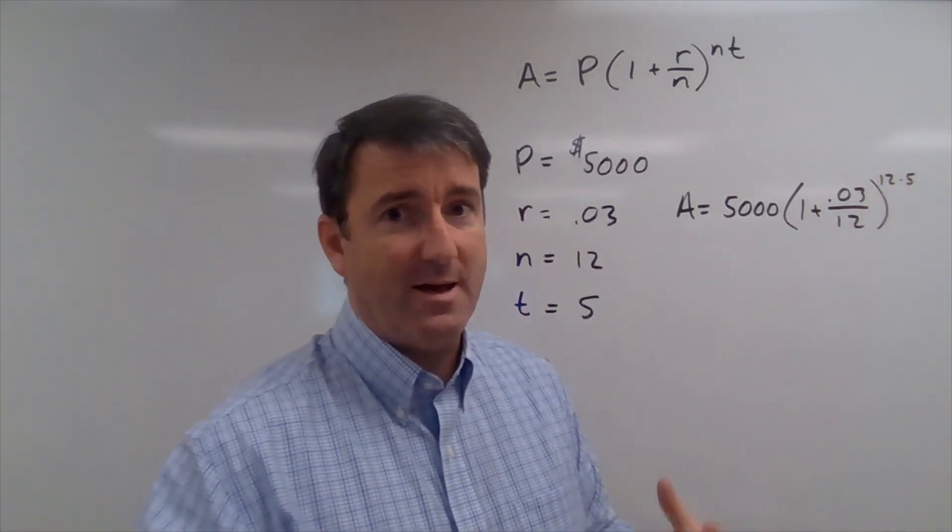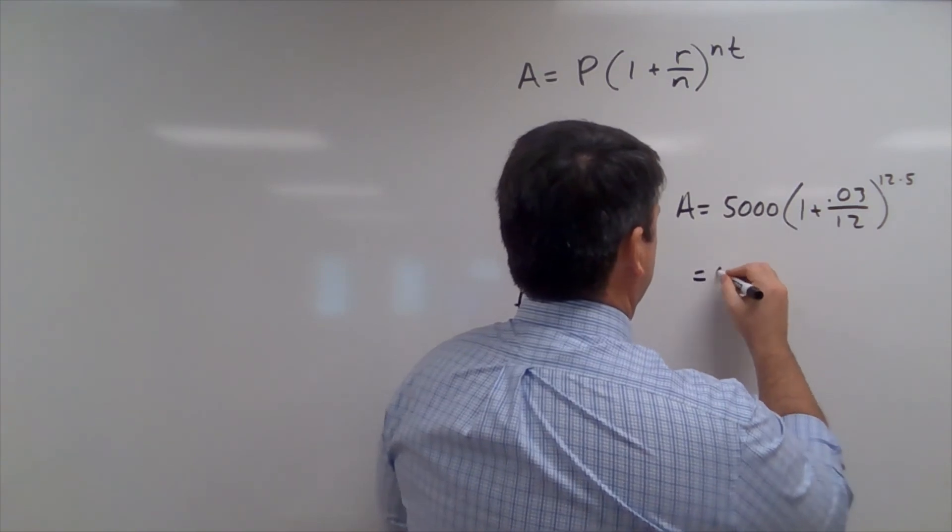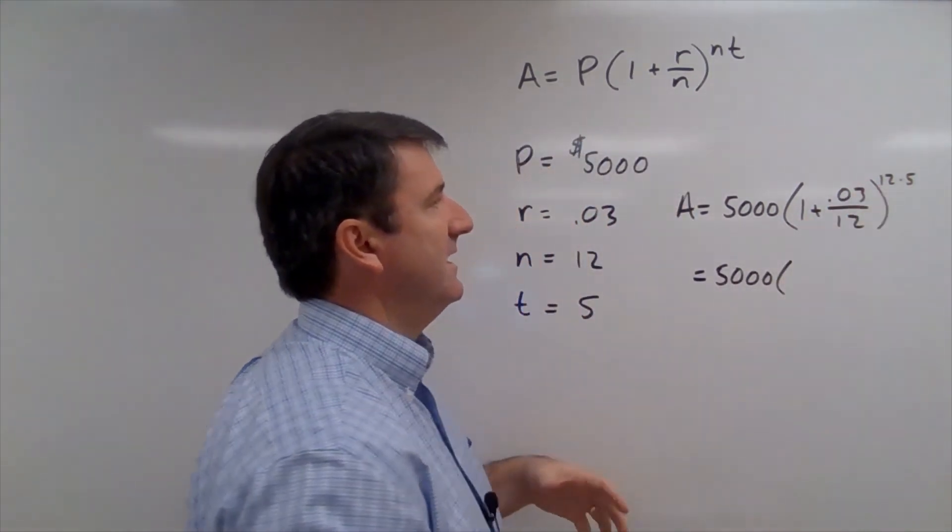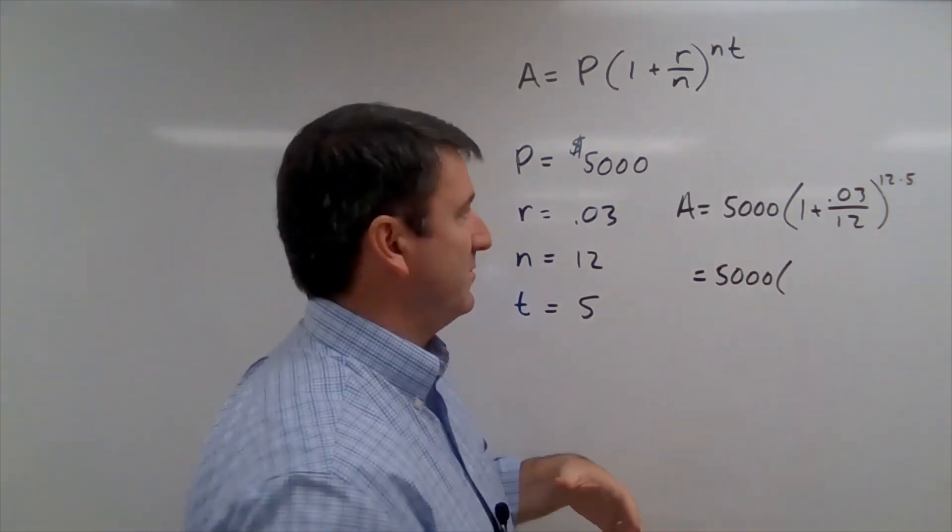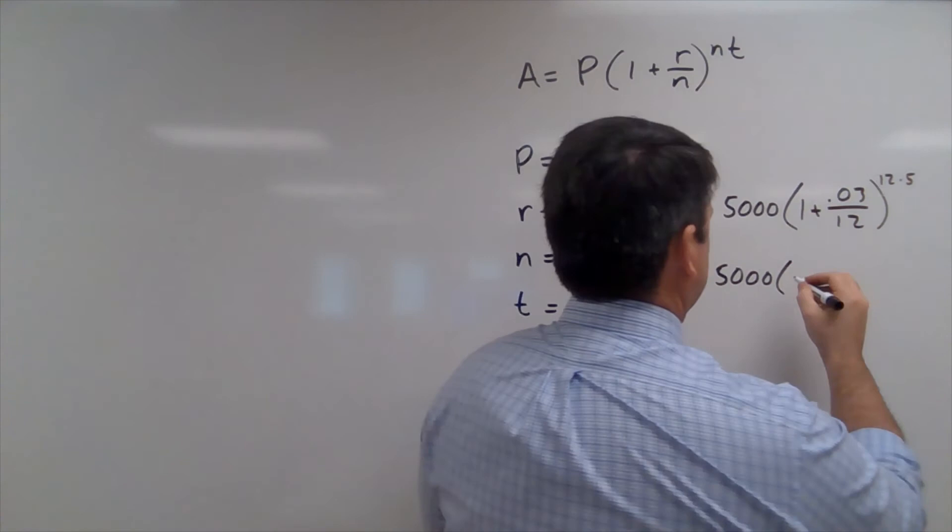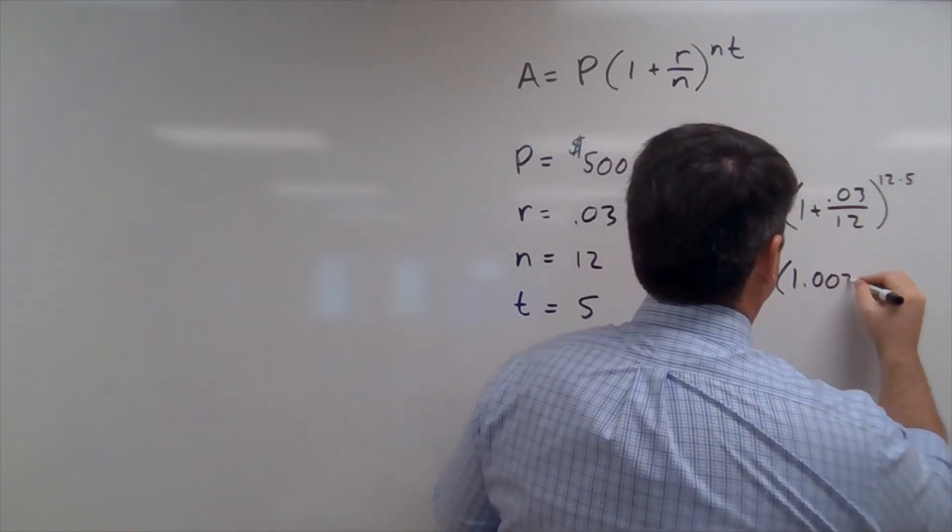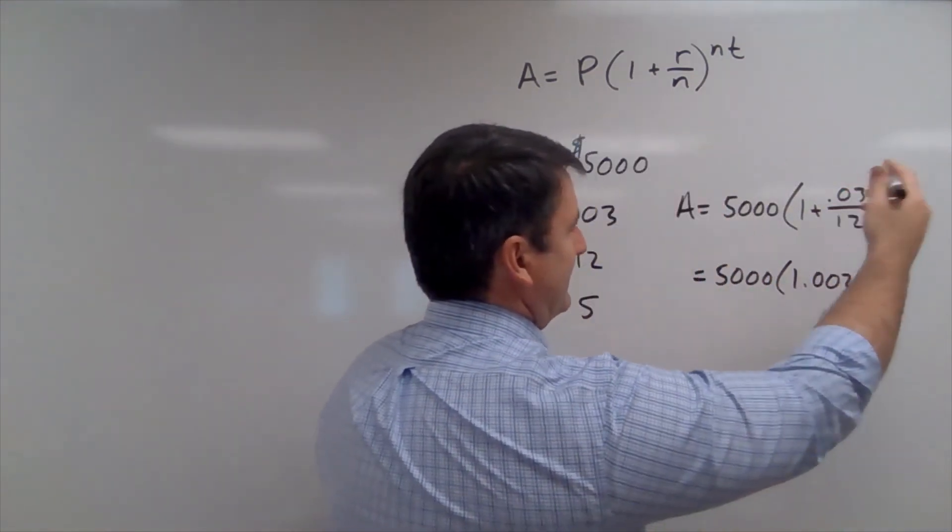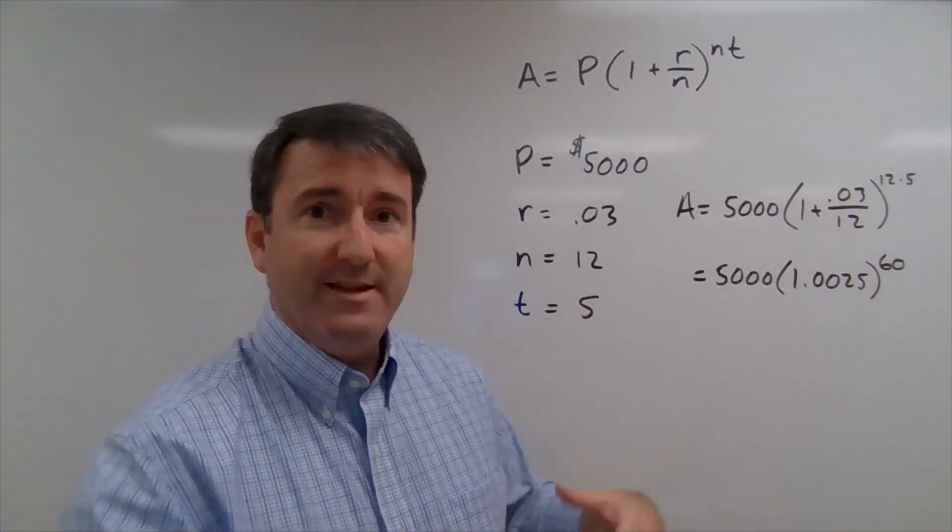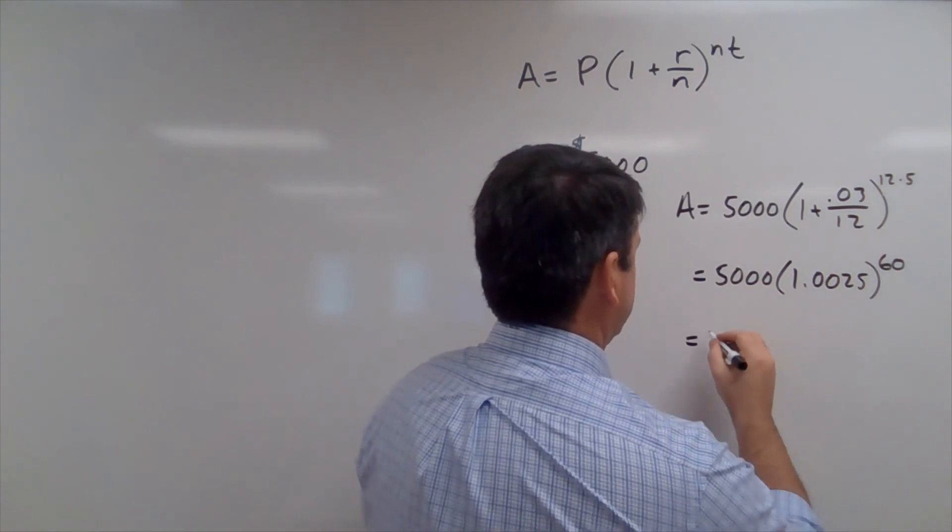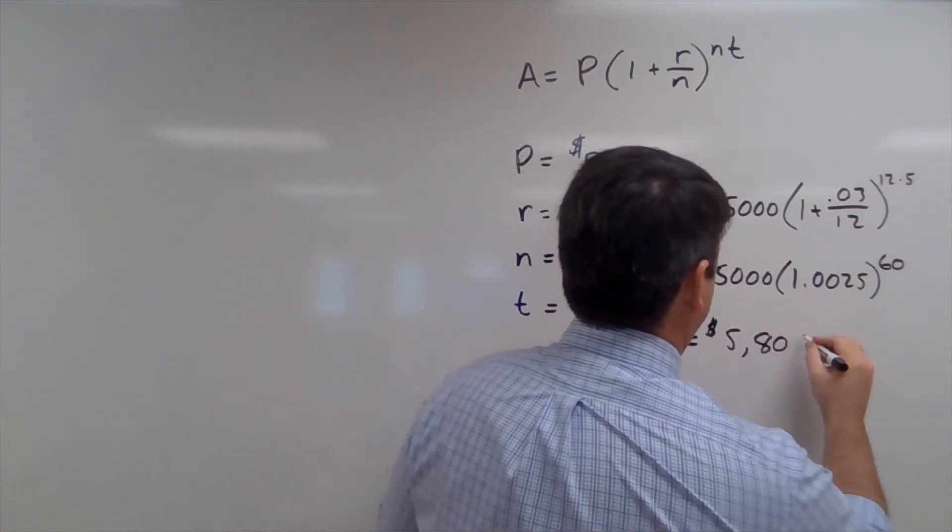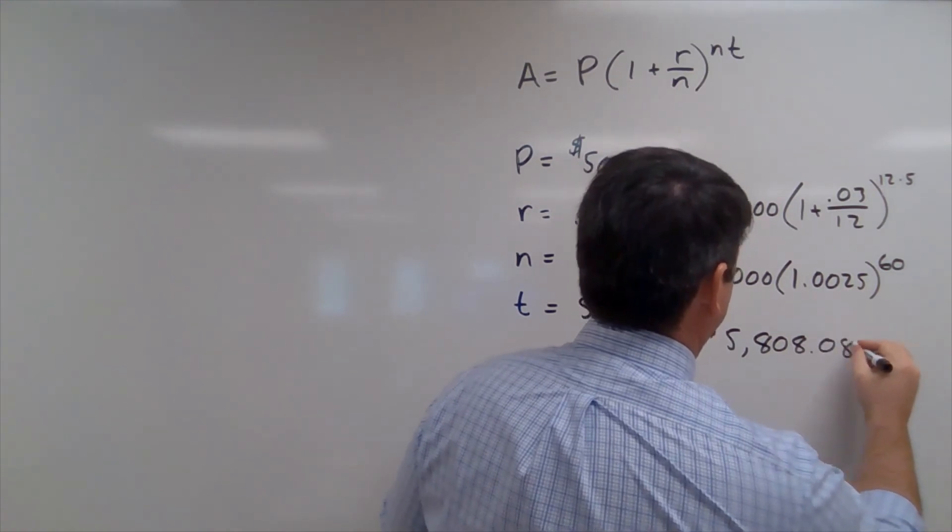So this is going to be equal to 5,000 times 1 plus 0.03 divided by 12. 0.03 divided by 12 is 0.0025. So this is going to be 1.0025. And we're going to take that to the 60th power. And then if we plug that into our calculator, we're going to get that this is equal to $5,808.08.